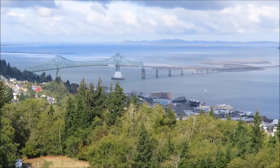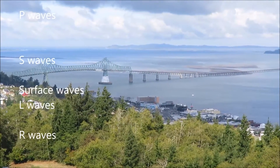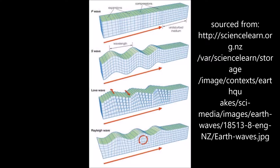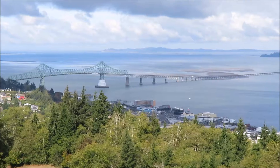Suddenly, the plates will slip, releasing P, S, and L waves. P waves, primary waves, are the fastest waves, followed by S waves, which are called secondary waves and shear waves. These move in a side-to-side motion, causing rigid structures to shake.